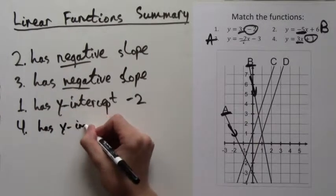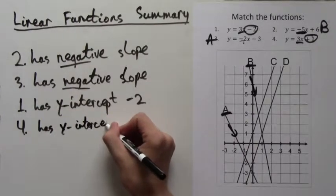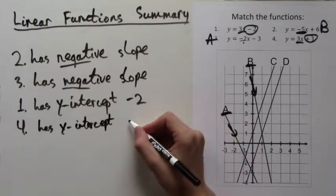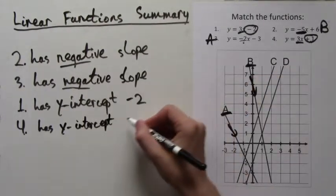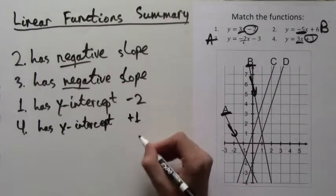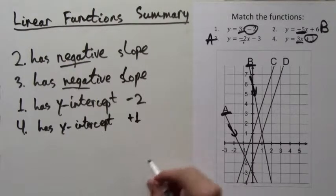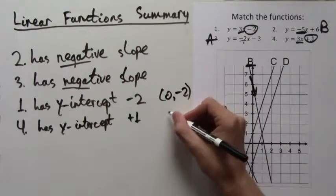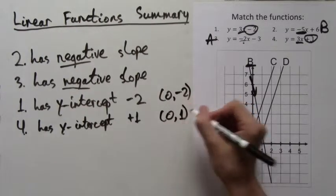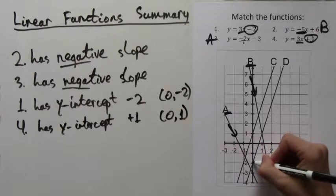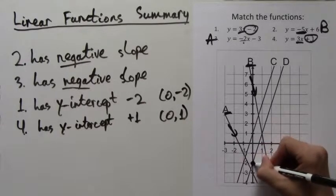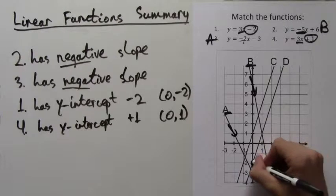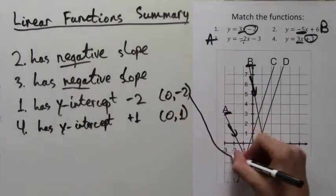Now remember that the y-intercept means that the point with x-coordinate 0 and y-coordinate equal to the y-intercept lies on the line. So that means that the point (0, -2) should lie on the line of formula number 1, and the point (0, 1) should lie on the line of formula number 4. Let's graph these two points. Here is (0, -2), 2 below the origin.